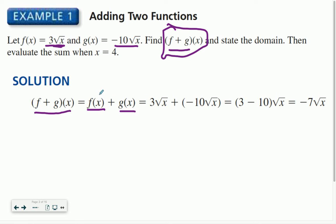So all I'm doing is I'm replacing my f(x), which is 3 times the square root of x here, and I'm adding my g(x), which is negative 10 times the square root of x. You can skip this step if you want, but I like to go right from here to here.